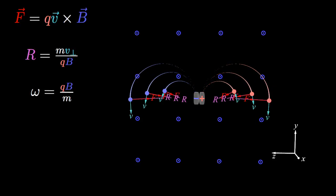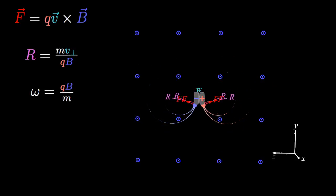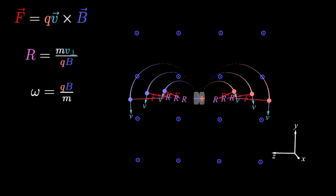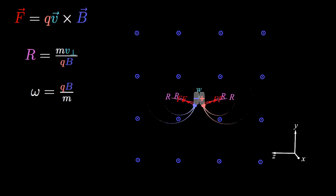Speed also affects the radius of circular motion. However, the time it takes is not affected by the speed. The frequency of orbits only depends upon the charge, the magnetic field strength, and the charge's mass.